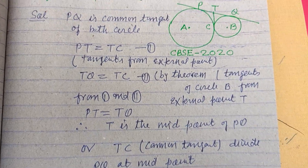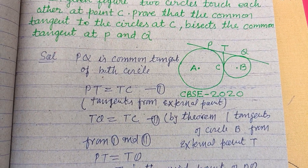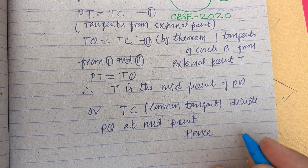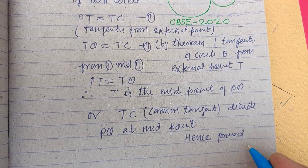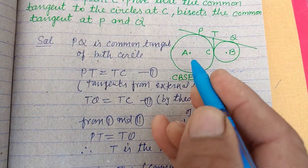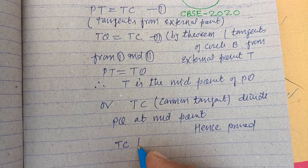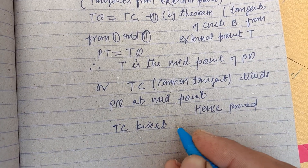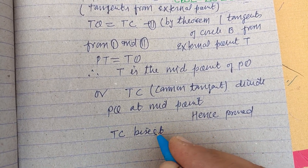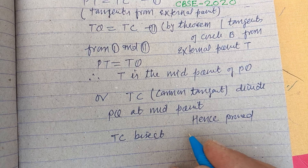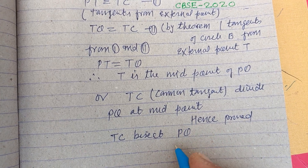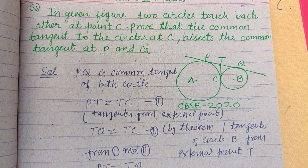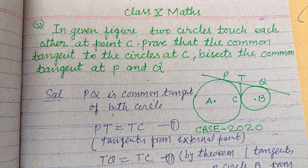So this proves that TC bisects PQ, dividing it into two equal parts. I hope you got it. Please like the video, subscribe to the channel. Thanks for watching.